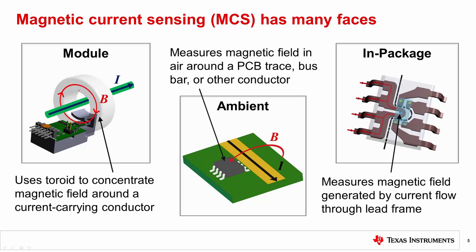Finally, the third type is in-package magnetic current sensing. In this technology, the current to be measured actually passes through the device package, and the magnetic field generated by the current flow through the lead frame is measured internally with an isolated sensor IC. The differences between these different solutions are not always clear. Each implementation has inherent benefits and challenges, but could fundamentally solve the same problem, and thus be interchangeable to a certain degree depending on application requirements.